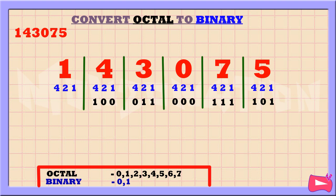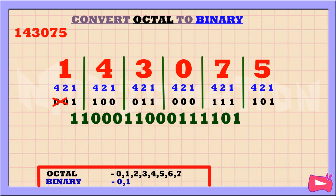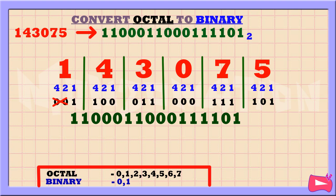Next, we have 1. This is equal to 1, so let's replace it with 1. We didn't use the 4 and 2, so let's replace it with a 0. Remember to ignore the 0s in front, because the binary number always starts with 1, so let's get rid of the 0s in front. So, the binary equivalent of 143075 is 110011000111 base 2.